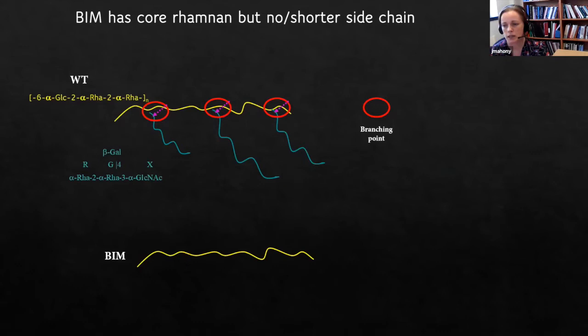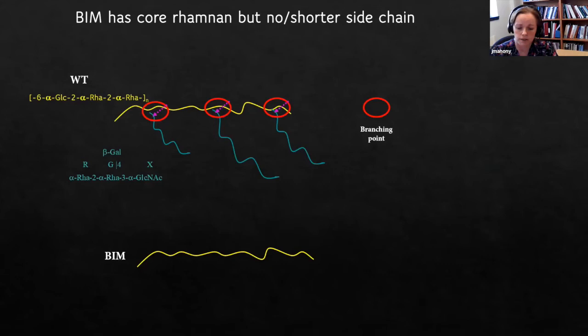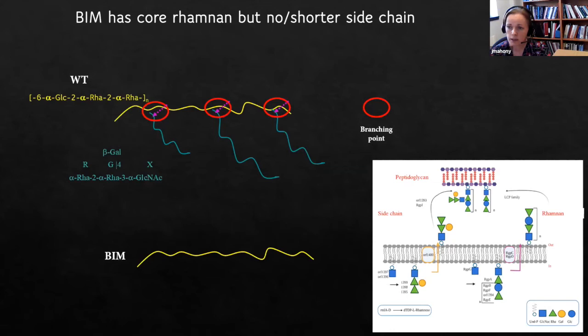Through analysis of multiple mutants, we've been able to improve our functional annotation of the RGP-encoding clusters, which has been transformative — when we started, we had no clue what any of the genes encoded. This has also allowed us to propose a biosynthetic pathway model for these RGPs: the rhamnan backbone or core structure is produced separately from the side chain, which is then attached on the external face of the cell. In some cases it may be polymerized; for other strains, it may not.